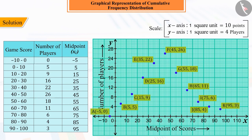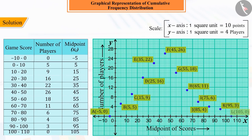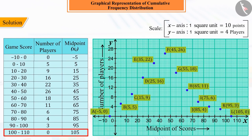Also plot point L, that is, minus 5 with 0 frequency, which comes just after point K at minus 5, 3. It is done in this manner so that we can get the frequency polygon, about which we have studied in the previous class.